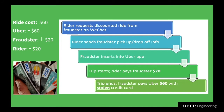If you look at this flowchart: the rider requests the discounted ride on WeChat, sends the fraudster the pickup info, the fraudster inserts that into the Uber app, the trip starts, and the rider immediately pays the fraudster. If the fraudster doesn't receive payment, they'll cancel the ride, since they're the ones in control. The fraudster then pays with the stolen card, and Uber faces chargeback disputes. That means if you see a charge you didn't make on your credit card, you contact your bank, file a dispute, and your bank returns the funds but then comes after the merchant. Uber is out the full cost of the ride — let's assume $60.